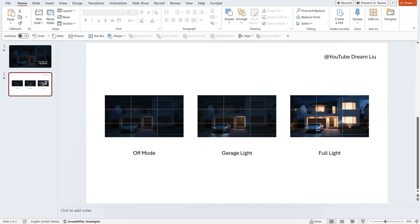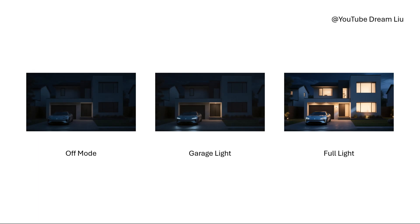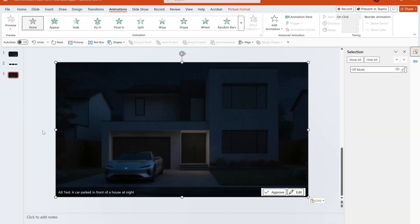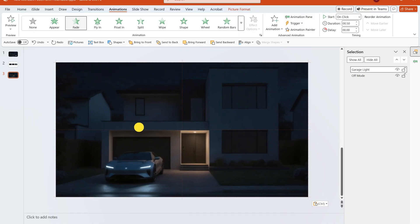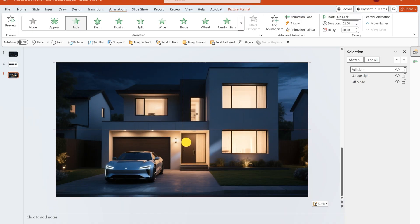Let's make it together. Prepare three images corresponding to the off mode, garage mode, and full light mode, respectively. Note: ensure that the architectural elements in the images are completely aligned to avoid animation glitches later. Overlay the three images in the order of off mode, garage mode, and full light mode.